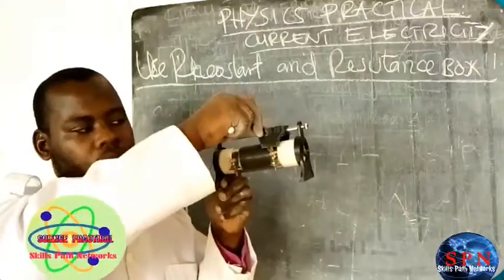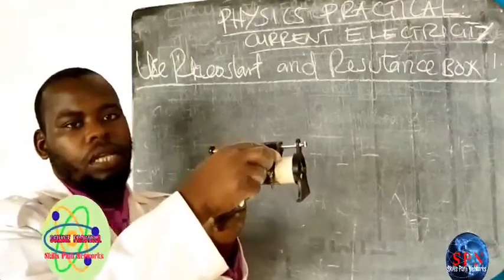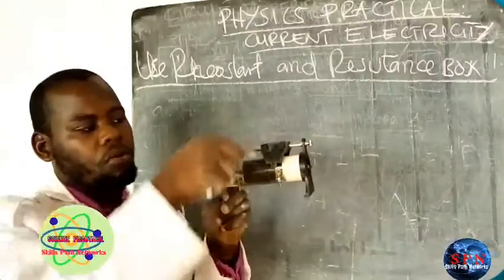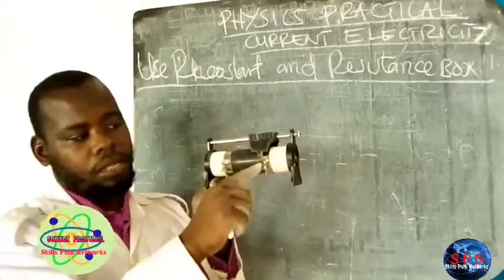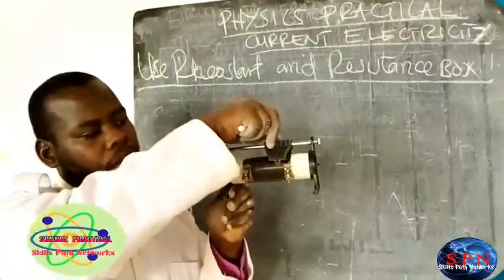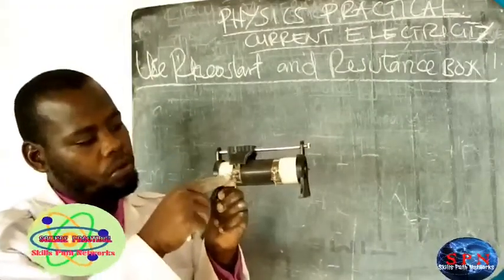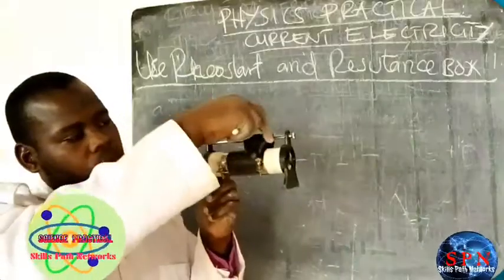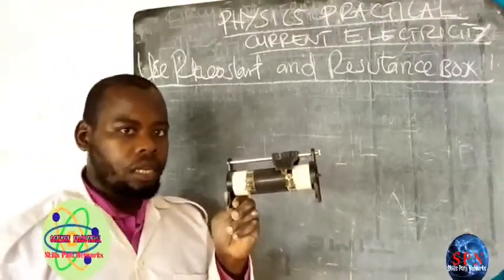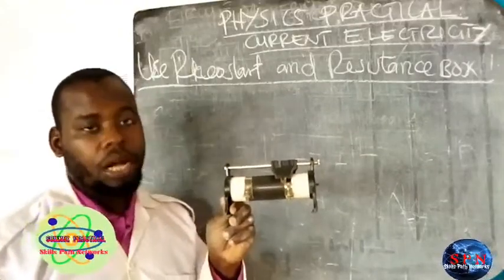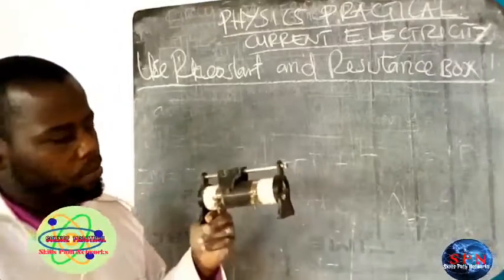When you connect on this side, make sure your reading is, you're going to take on this side. So when you connect here, make sure the sliding contact is here or near this side. When you connect on this side, it's supposed to be this side. When you connect here, then you are going to slide here. It means your readings will not be really on the ammeter or voltmeter.